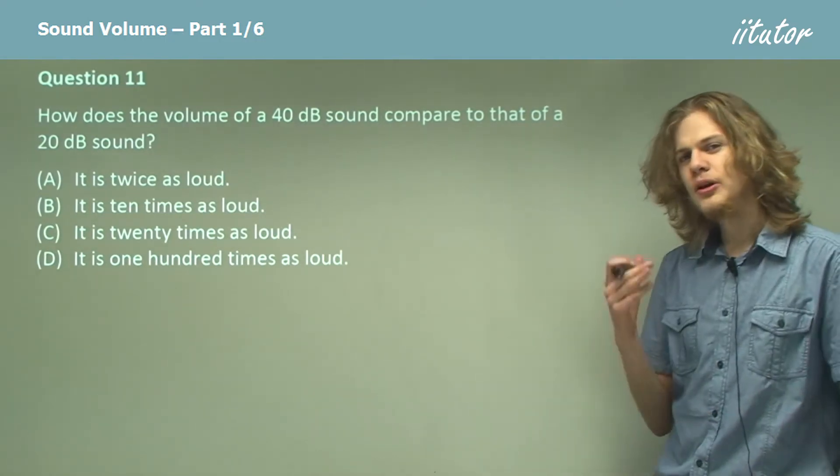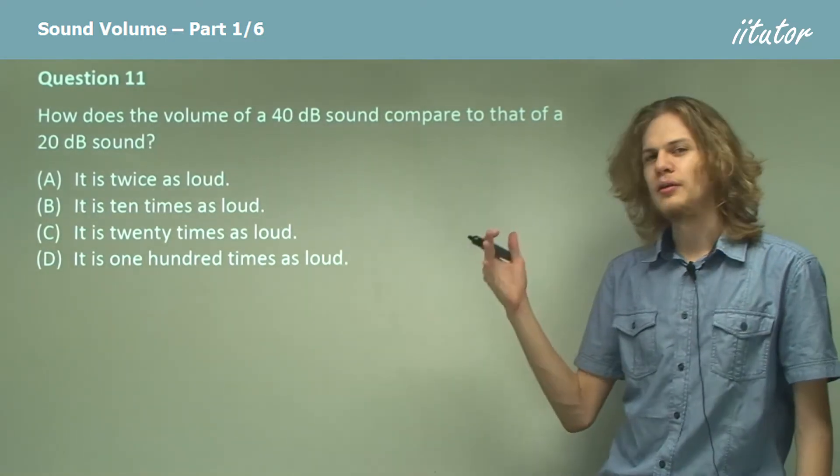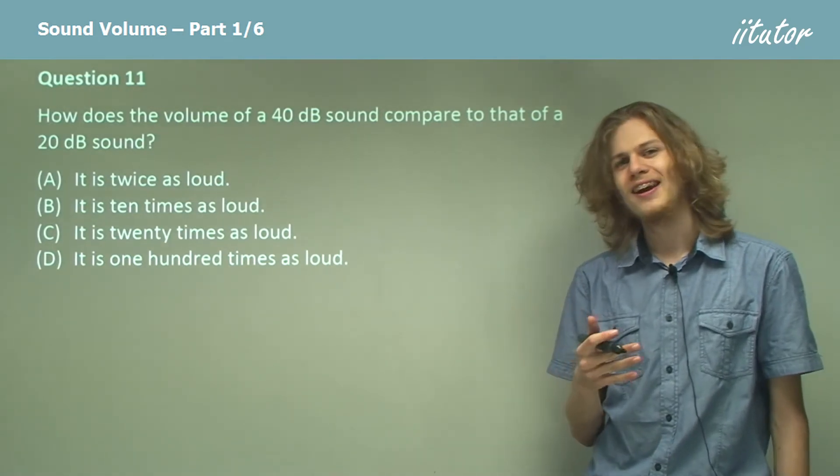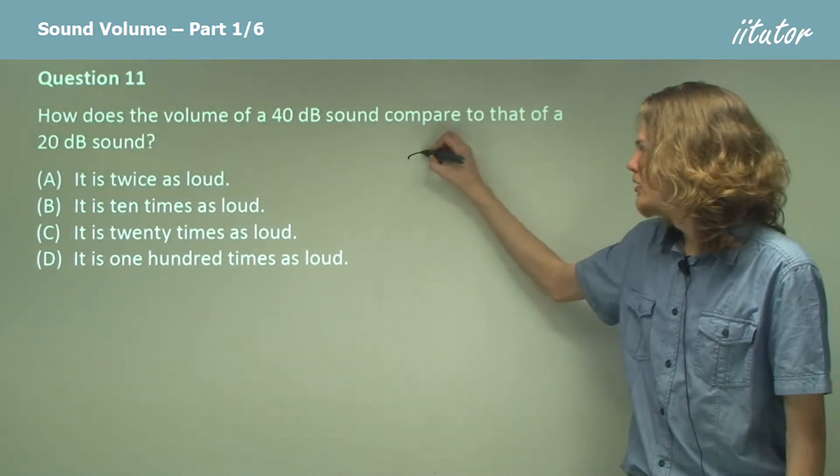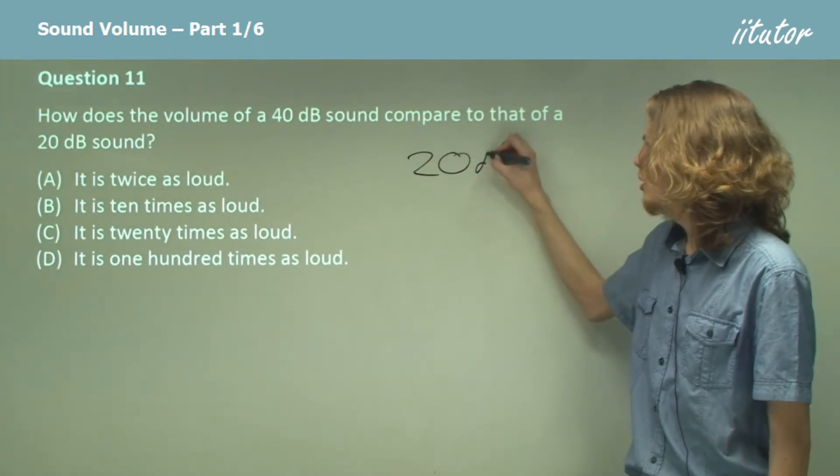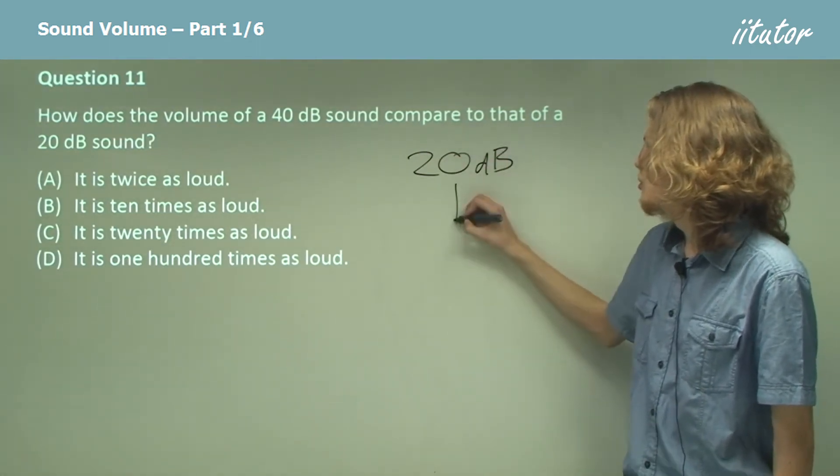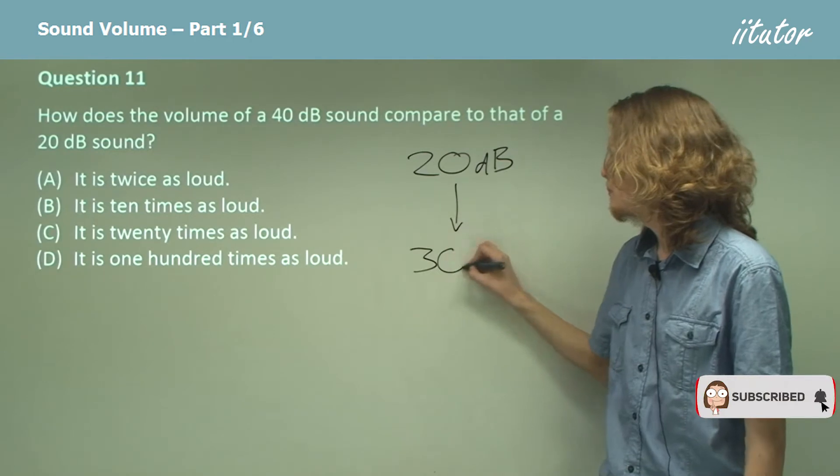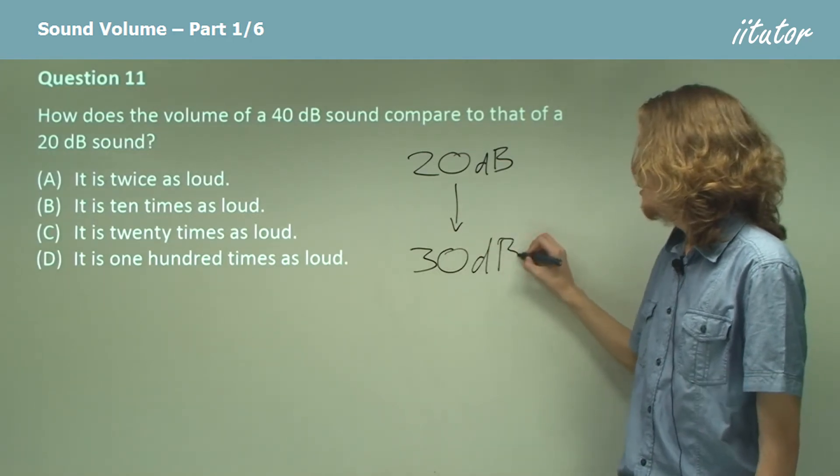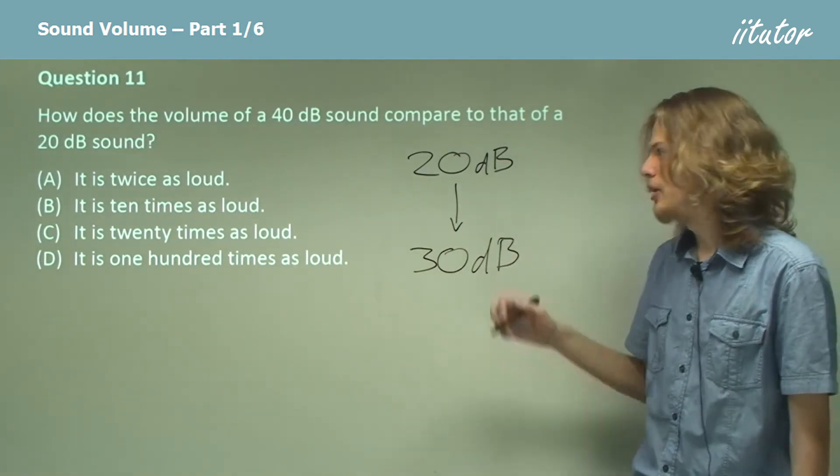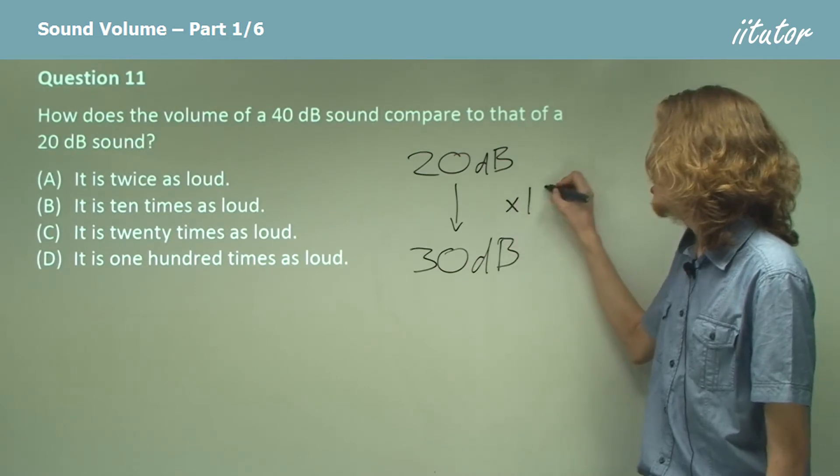We know that if we increase the volume of something by 10 decibels, it's 10 times louder. So if we go from 20 decibels to 30 decibels, then the 30 decibel sound will be 10 times louder.